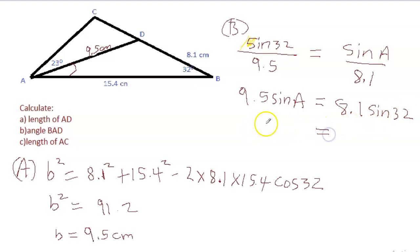We need to find A, but we have to find sine A first. So we divide both sides by 9.5, so we'll have sine A. Sine A equals - using my calculator - 8.1 times sine 32 divided by 9.5, I am getting 0.45. So sine A is 0.45, which would mean that A - shift, second function, sine - 0.45, and I get 26.7 degrees. So this angle is 26.7 degrees.